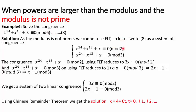Splitting mod 6 into mod 2 and mod 3 gives two congruences. Using Fermat's Little Theorem on the first congruence (mod 2) reduces it to 3x ≡ 0 (mod 2), and the second (mod 3) reduces to 2x + 1 ≡ 0 (mod 3), which simplifies to x ≡ 1 (mod 3) and x ≡ 0 (mod 2). Applying the Chinese Remainder Theorem gives x = 4 + 6t.